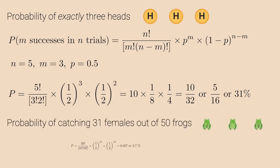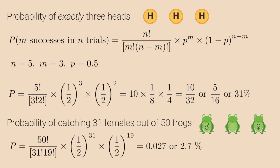As far as the problem of catching 31 female frogs out of 50 frogs, the answer is 2.7 percent.